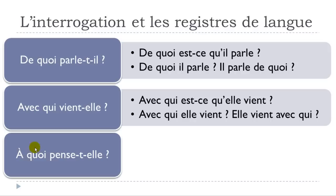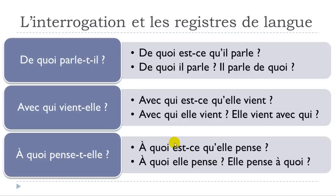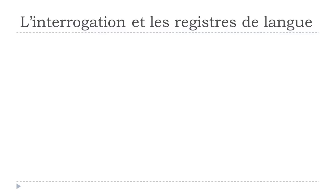À QUOI PENSE-T-ELLE? — in this case penser à something, not someone. Everyday: À QUOI EST-CE QU'ELLE PENSE? Informal: À QUOI ELLE PENSE? or ELLE PENSE À QUOI? Remember to raise your voice at the end since these are questions. Review: DE QUOI PARLE-T-IL? — DE QUOI EST-CE QU'IL PARLE? — DE QUOI IL PARLE? — IL PARLE DE QUOI? — AVEC QUI VIENT-ELLE? — AVEC QUI EST-CE QU'ELLE VIENT? — AVEC QUI ELLE VIENT? — ELLE VIENT AVEC QUI? — À QUOI PENSE-T-ELLE? — À QUOI EST-CE QU'ELLE PENSE? — À QUOI ELLE PENSE? — ELLE PENSE À QUOI?